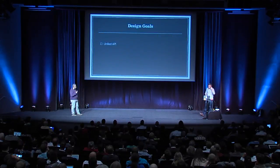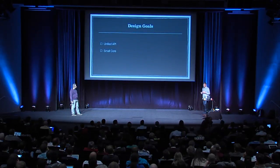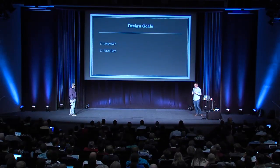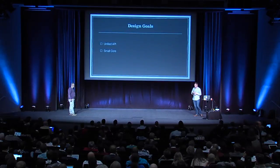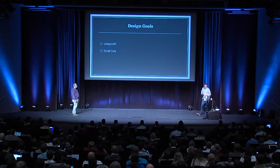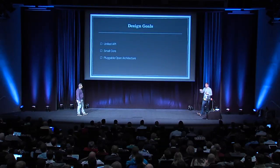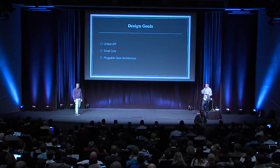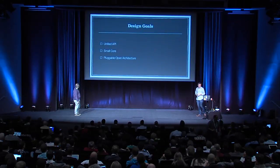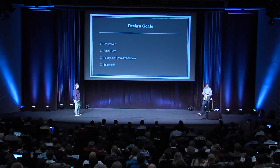Our design goal was to have a unified API with a small core — we kept the core small so that all implementers would cover the broadest range of offerings from different vendors. We wanted a pluggable open architecture so you can plug in different vendor implementations, and deployers have a choice of vendors, whether proprietary or open source. It's also extensible so they have the opportunity to gain access to new features.